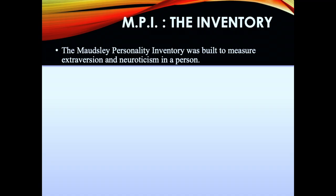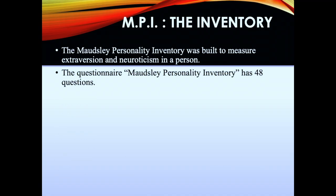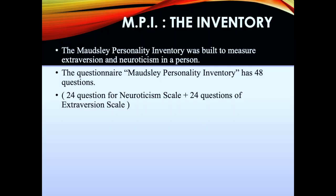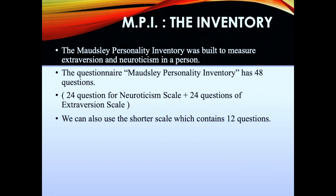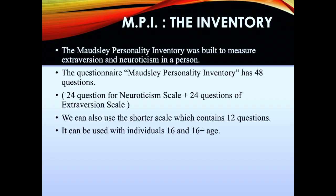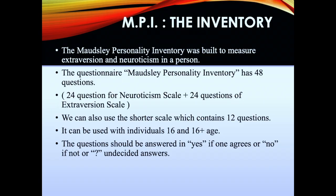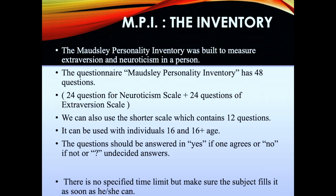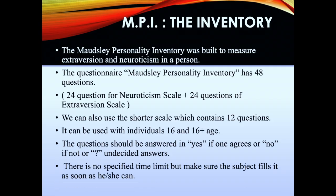The inventory is available in two forms: the long form and the short form. The long form has 48 questions in all — 24 questions from the neuroticism scale and 24 questions from the extroversion scale. The short form has 12 questions in all. The inventory can be used with anyone who is 16 years old or above. Questions should be answered with yes if one agrees, no if one doesn't agree, and a question mark if undecided. There is no specific time limit, but usually people take 15 minutes.